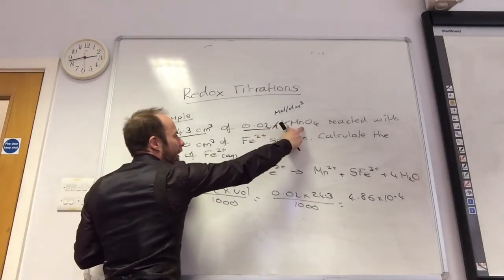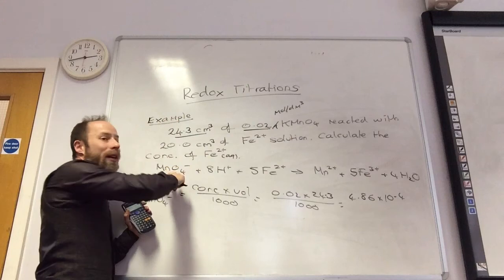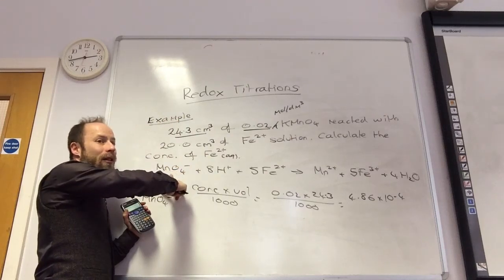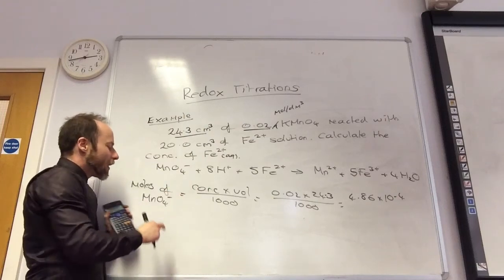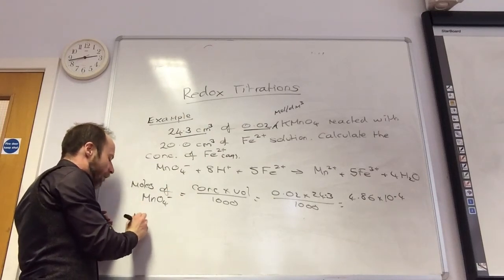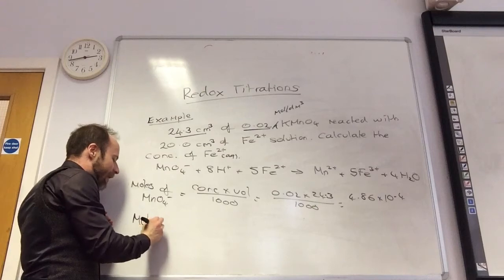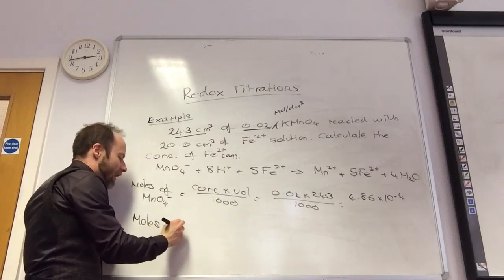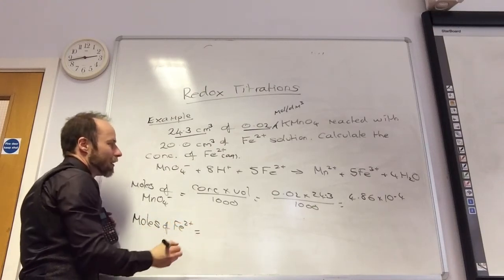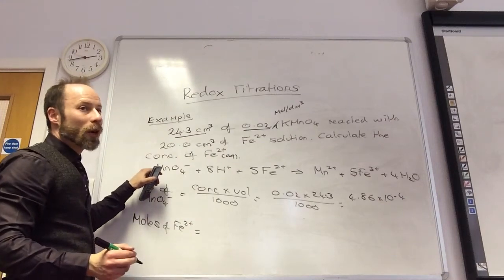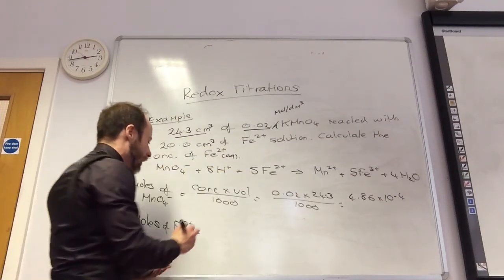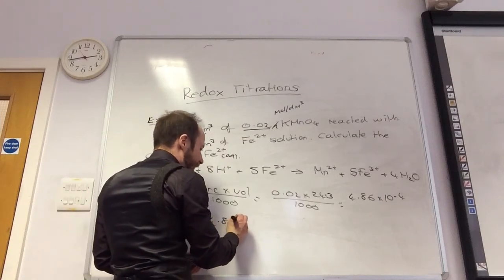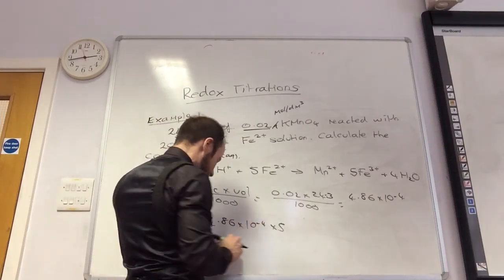Yeah, because it doesn't matter, because for every one KMnO4, I get one MnO4 minus. So it doesn't matter. Okay, so if I've got how many moles of MnO4 minus, how many moles of Fe2 plus must I have? For every one of those, I need 5 ions. So it's times 5. Well done.